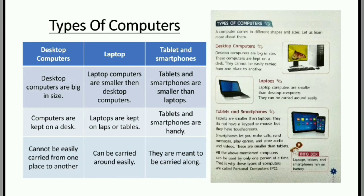Now let's discuss the types of computers. There are three types given in the book. The first one is desktop computers, the second is laptop, and the third one is tablets and smartphones.